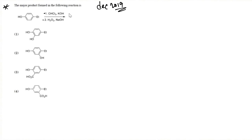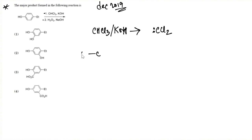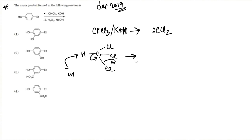When we take chloroform and a base combination, what we are going to get is dichlorocarbene. This is formed via alpha elimination — both the hydrogen and the chlorine are eliminated from the same carbon to give us dichlorocarbene. This is not a lone pair; it is just a pair of electrons, but the carbene is electron deficient.